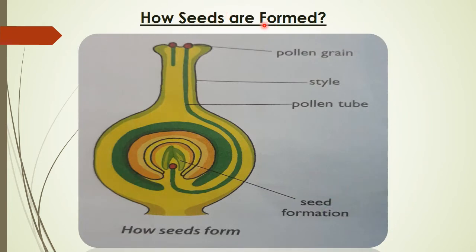How are seeds formed? When an insect sits on a flower to suck up the nectar, it transfers the pollen stuck to its body onto the stigma. After some time, when pollen grains have reached the stigma, they break open and produce a tube called the pollen tube. This pollen tube slowly grows through the style to reach the ovary, where the contents of the tube mix with the ovules and form the seed.